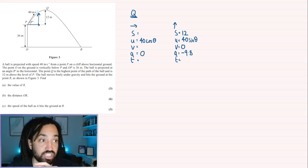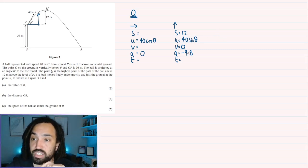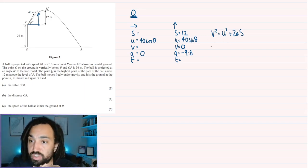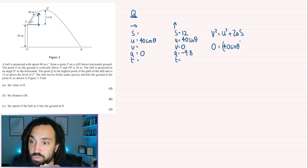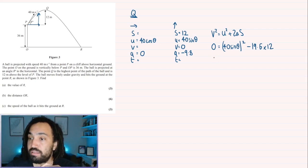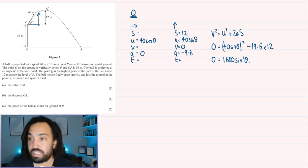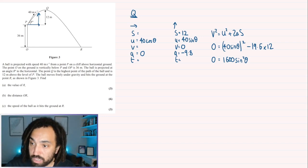Okay, so that means I can use this side, my vertical, and I can use the one that doesn't involve T. So that is V squared is equal to U squared plus 2AS. Okay, so let's solve this. So V is zero. U squared is going to be 40 sine theta squared. 2AS, well 2A is minus 19.6 and S is 12.